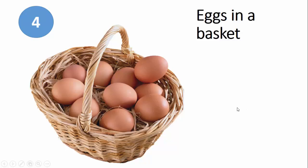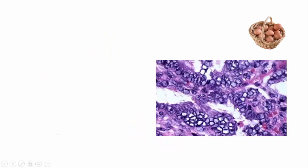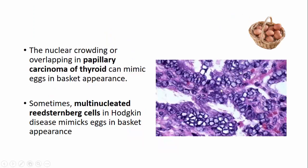The fourth one is eggs in a basket. Nuclear crowding or overlapping seen in papillary carcinoma of the thyroid can mimic an eggs-in-a-basket appearance. Sometimes multinucleated Reed-Sternberg cells in Hodgkin's disease also mimic this eggs-in-a-basket appearance.